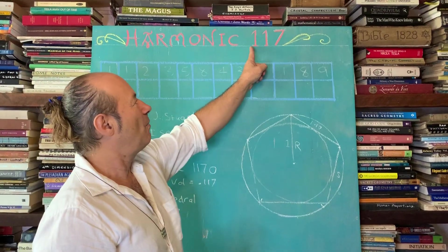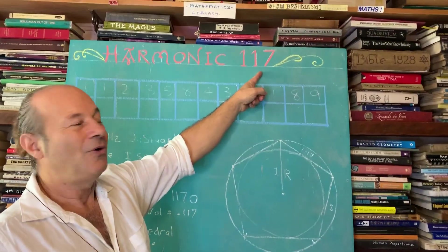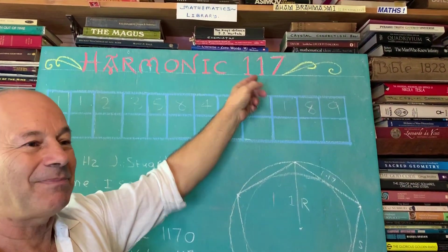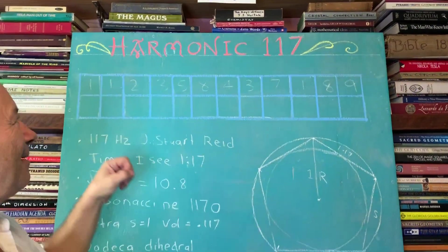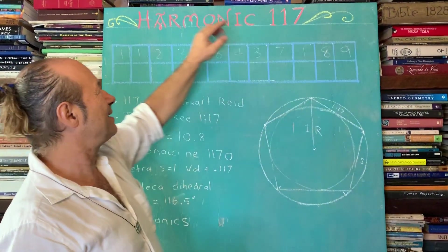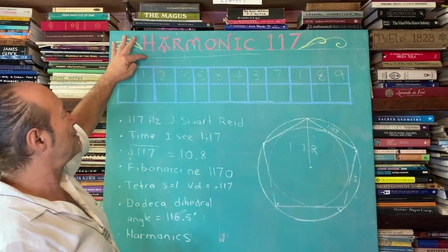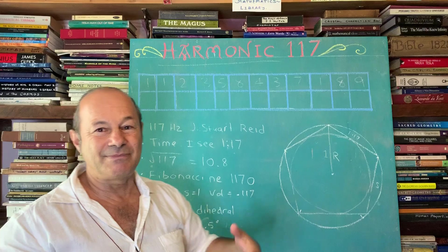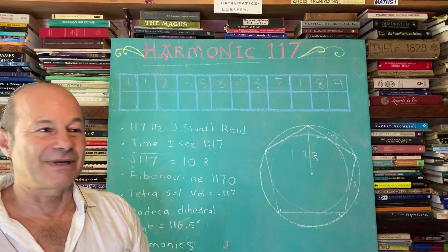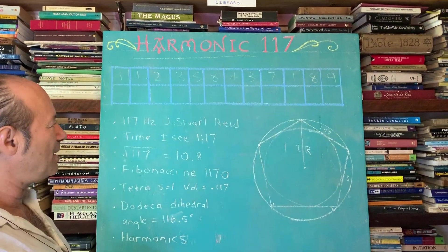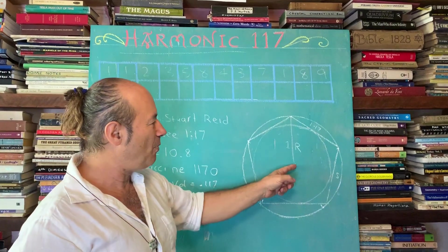I've noticed that the number 117 or 1.17 has popped up all the time, so I'm calling it harmonic 117. The word harmonic comes from the word harmos in ancient Greek, and harmos meant order in the universe. It's about harmonic order. So what's so special about the number 117?